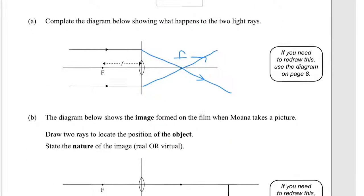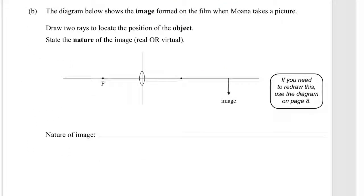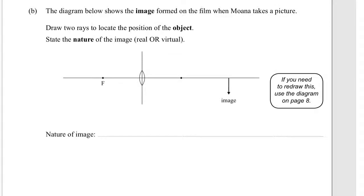Part B: The diagram below shows the image formed on the film when Moana takes a picture. Again, draw two rays to locate the position of the object. State the nature of the image, real or virtual. So, this is the image formed when Moana is taking a picture.